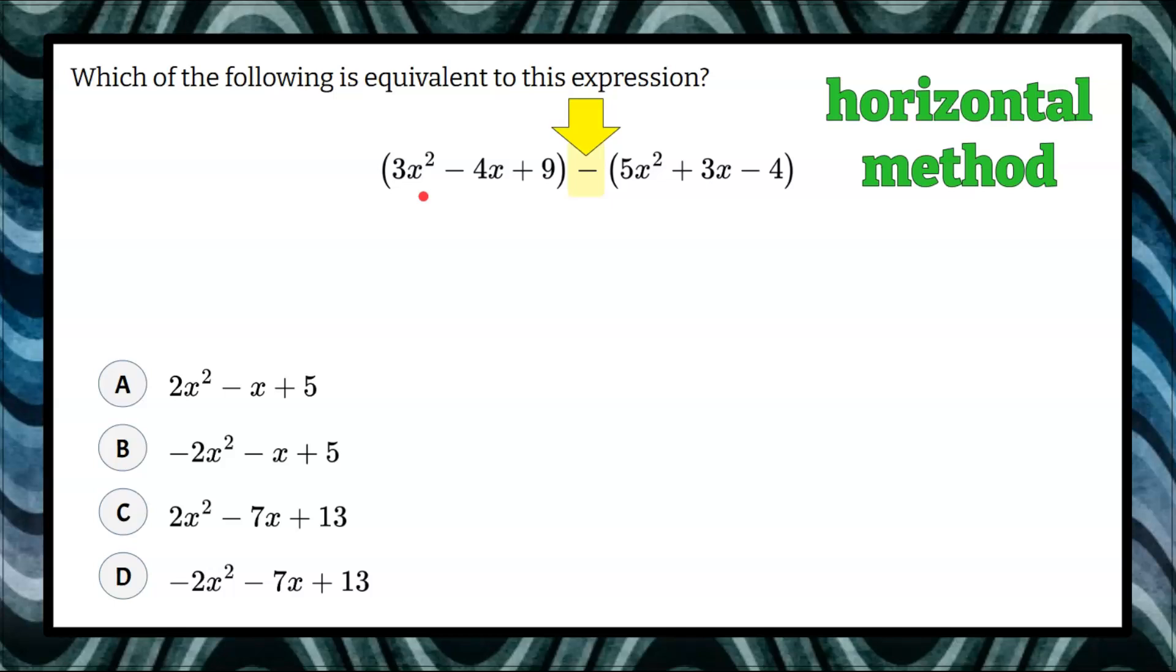So we're going to start by looking at like terms, because we can subtract like terms. So I see that I have 3x² and 5x². So 3x² subtract 5x² is what we'll do.